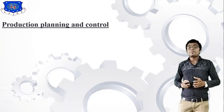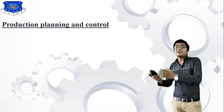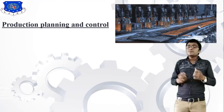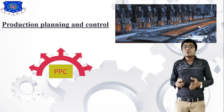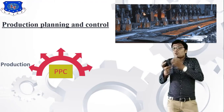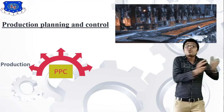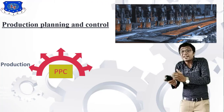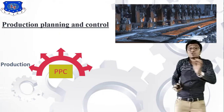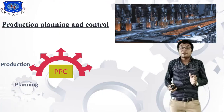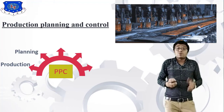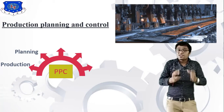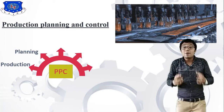The second chapter is Production Planning and Control. Production is when raw material is converted into a finished product. This is very common. There are many types of production — batch production, mass production, and continuous production — which we will study in this chapter.